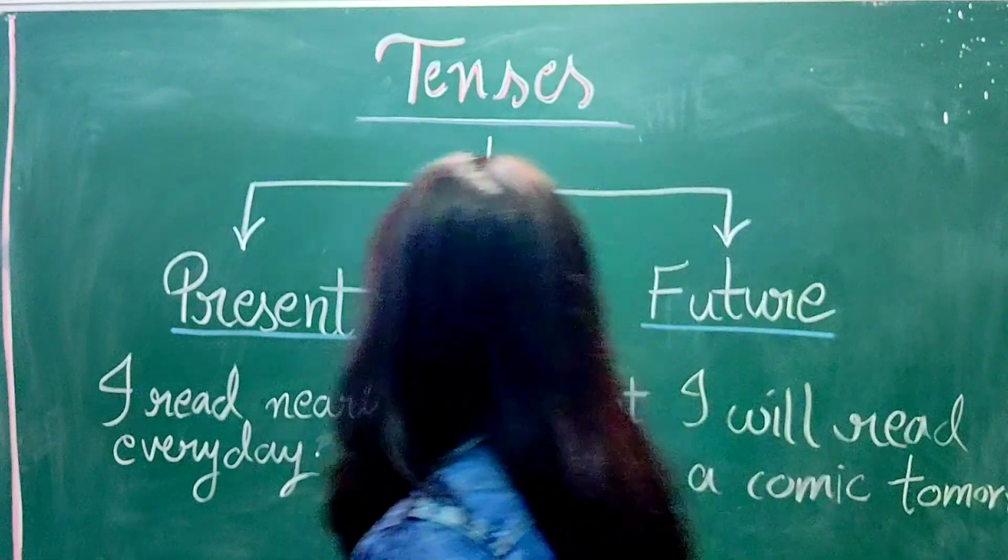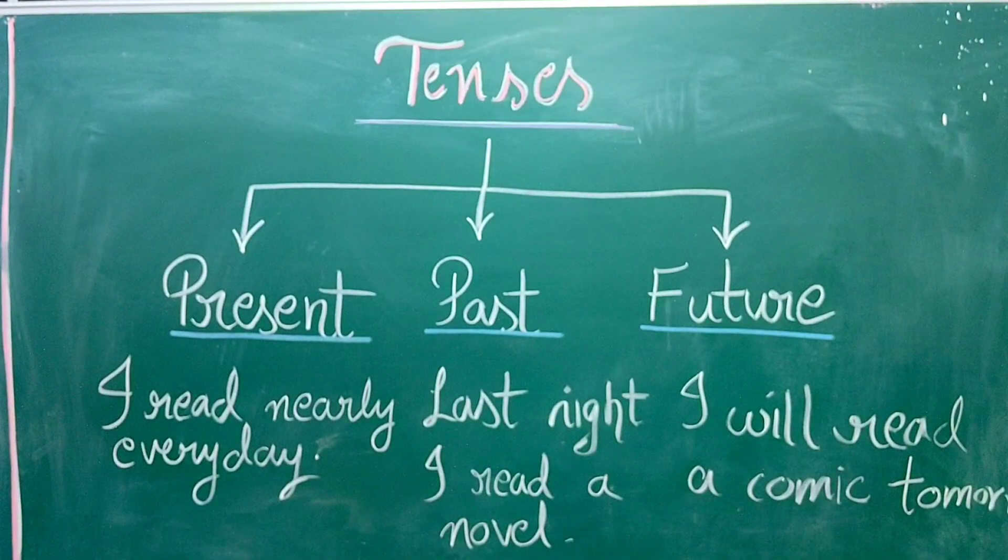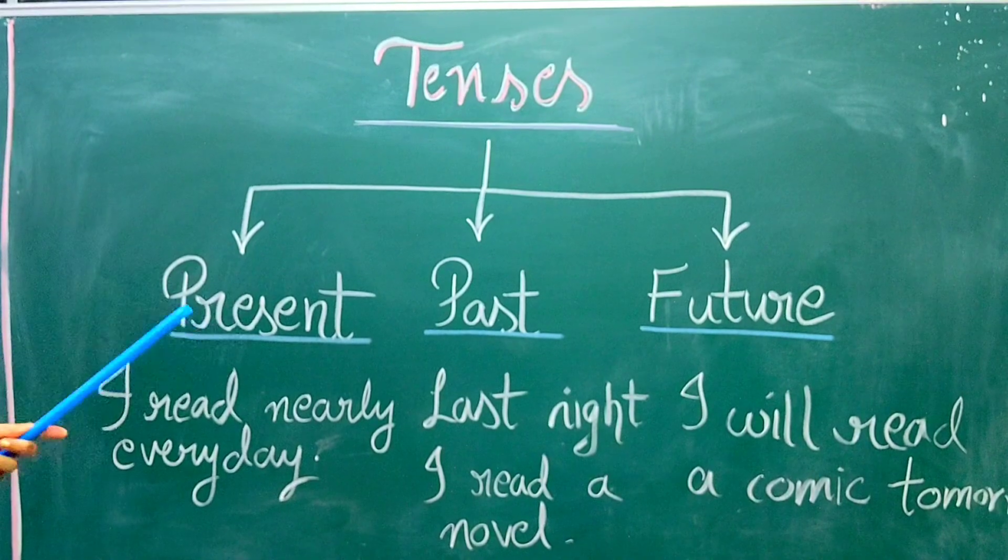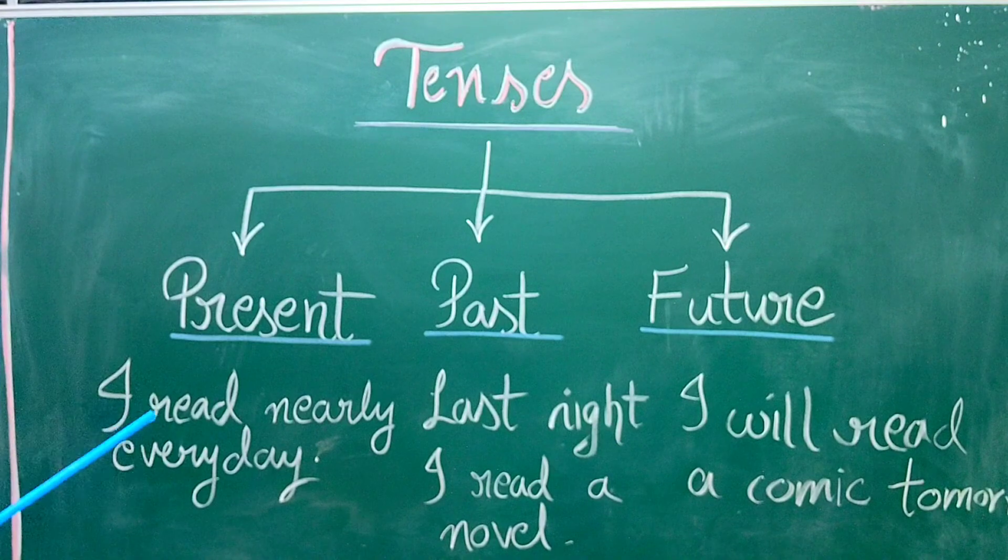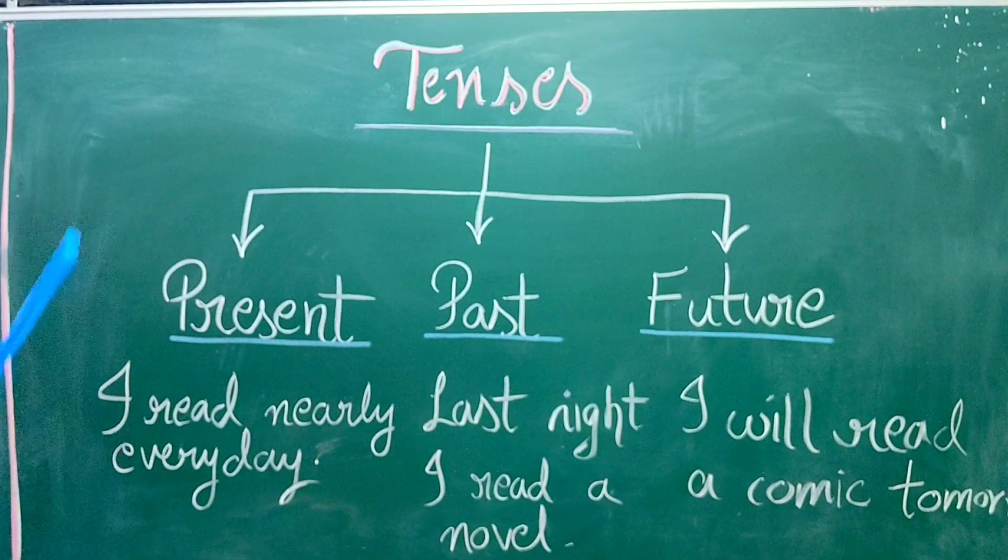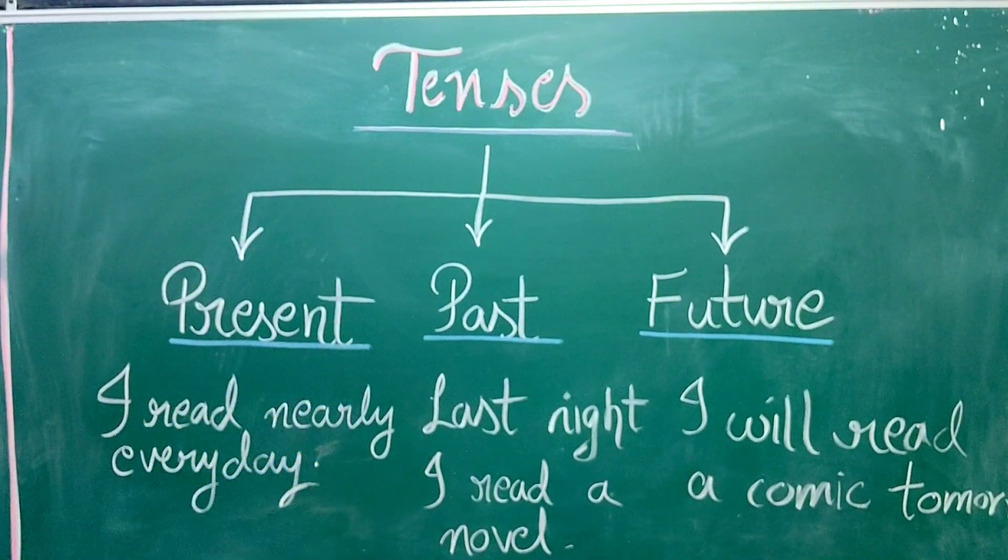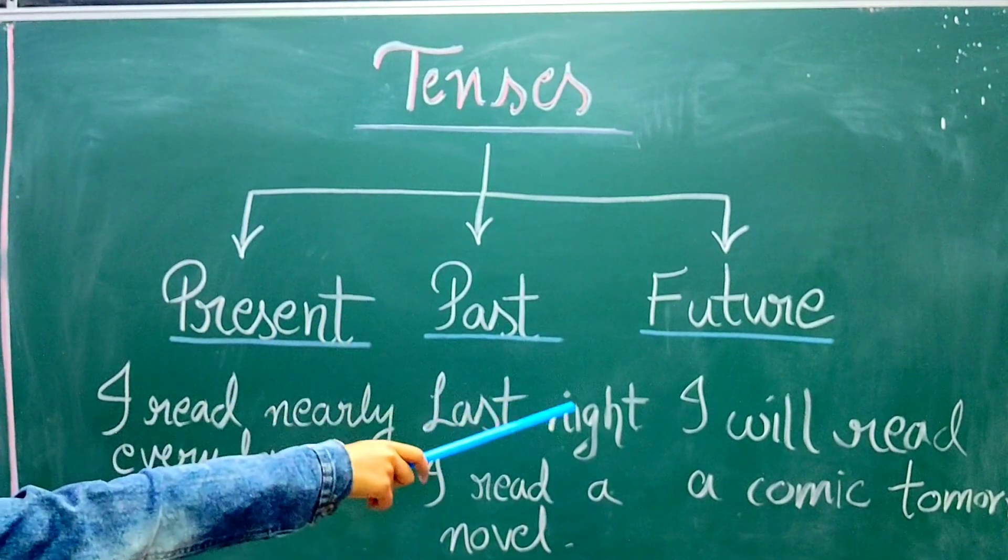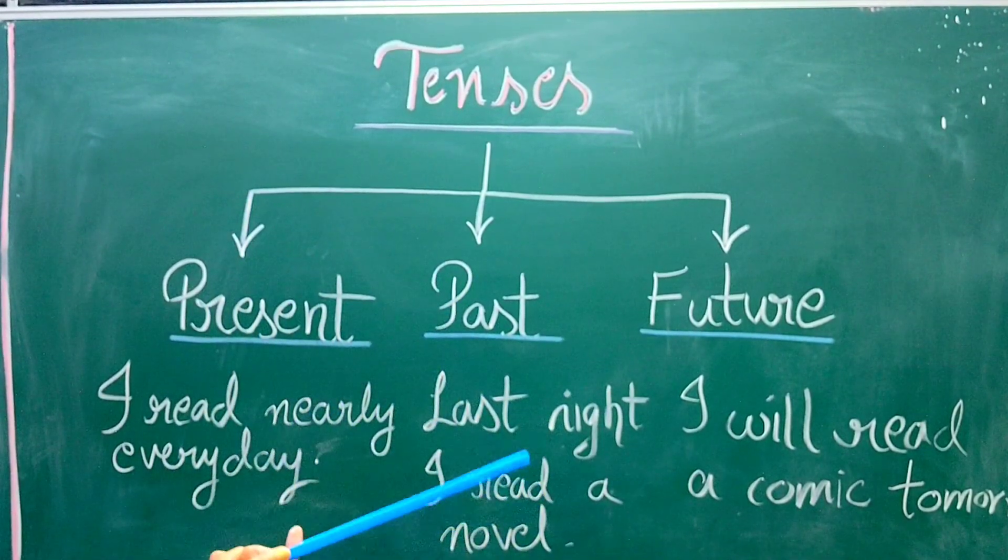So children, have you seen the three types of tenses, present, past, and future, and how they differ from each other. In present tense, we talk about things that are happening currently. In past tense, we talk about things that have already happened. And in future tense, we talk about things that are going to happen, or that will happen in future.